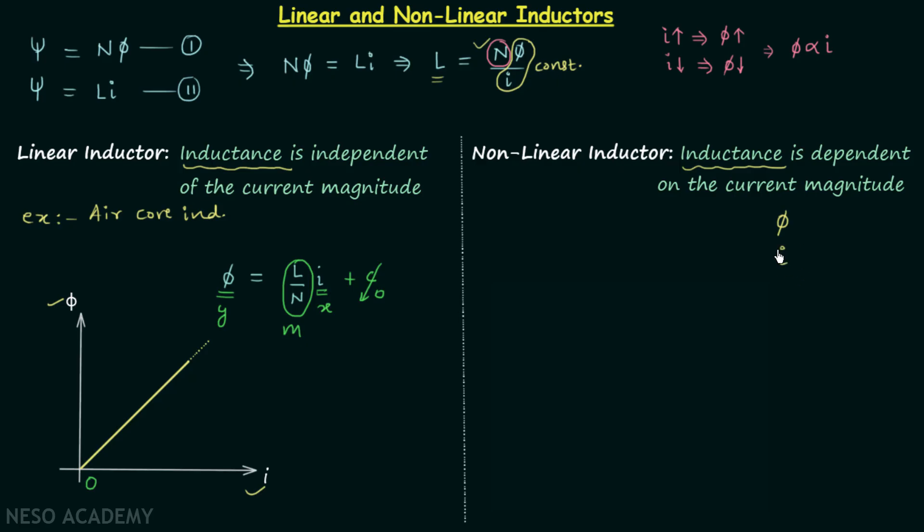This happens because φ will not change linearly with current i. There is a core inside the inductor, and therefore when you increase current i, φ will increase. But after some time when current i is high, there will be saturation of the material of the core, and therefore φ will not increase equally. Hence, we have a nonlinear curve and we call the inductor a nonlinear inductor.